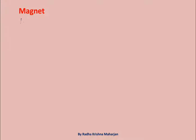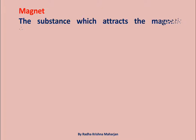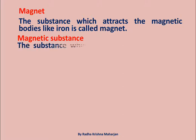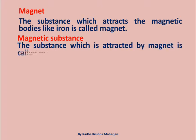Magnet: The substance which attracts magnetic bodies like iron is called a Magnet. Magnetic Substance: The substance which is attracted by a magnet is called a Magnetic Substance.